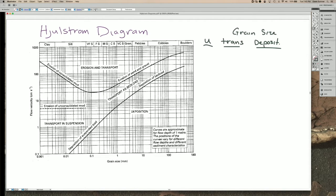We can also look at the opposite, which is the flow speed increasing through time. Let's say we start at 10 centimeters per second and increase our flow speed through time. At 10 centimeters per second, everything smaller than and including very coarse sand gets deposited.